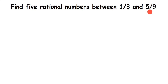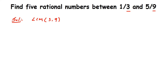Let us solve this. The first step is to check if the denominators are the same. We have a denominator of 3 and a denominator of 9, so they are not the same. We need to make them the same by taking the LCM of the denominators, which are 3 and 9. The LCM of 3 and 9 is 9.